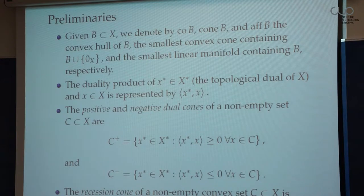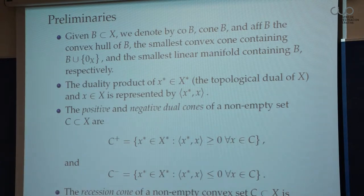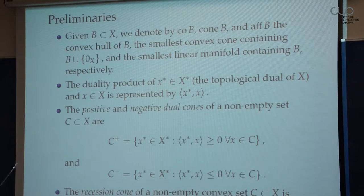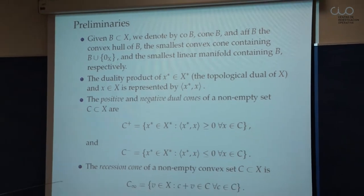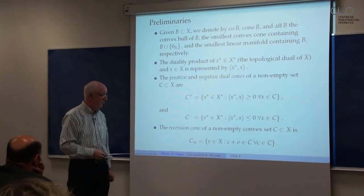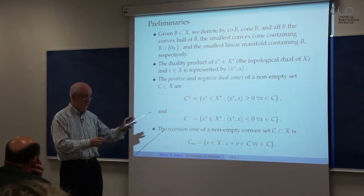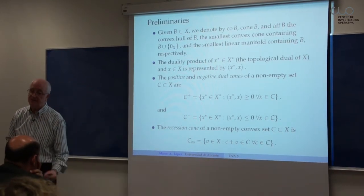Concerning notation, it is standard. The cone of B denotes the convex cone generated by B and always contains zero, even when B is the empty set. This is the standard notation for the duality product. We use the positive and negative dual cones of the set C, and the recession cone. All sets C considered in this paper are convex — sometimes closed, other times closedness can be relaxed.